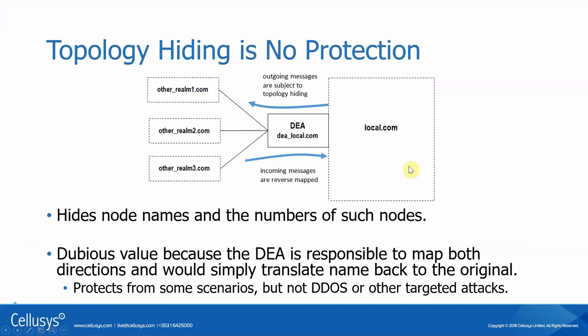There is one part of the specs called topology hiding. Topology hiding for diameter is a way of protecting the names and number of entities within your realm, so outside entities won't know that you have two HSSs or their proper names. However, this is really crappy security. Typically the DEA is simply mapping names back and forth, so the other realm doesn't care that it has the wrong name — it gets mapped to the correct name in the DEA anyway. This is a dubious value. If you're turning on topology hiding, please don't think you're adding security. It really does not add any level of security that any decent hacker cannot get through.